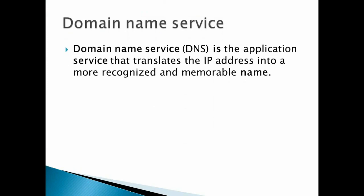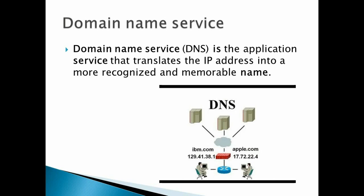Domain Name Service (DNS) is an application service that translates IP addresses into more recognizable and memorable names. It is not possible to remember IP numbers for so many websites. For example, ibm.com has the IP address 129.41.38.1, and apple.com is 17.72.22.4. Just like you remember a friend's name rather than their phone number, it is easier to remember website names than numbers.